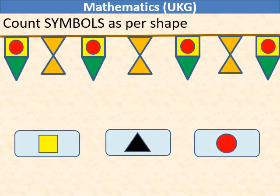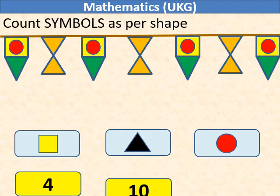Count symbols as per shape. There are three shapes: square, triangle, and circle. There are four squares. There are total ten triangles, four green triangles and six orange triangles, and there are four circles.